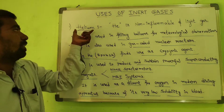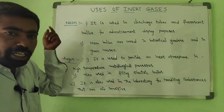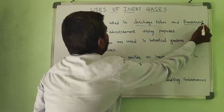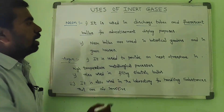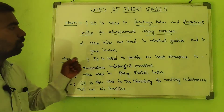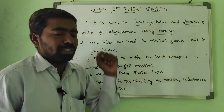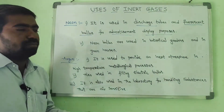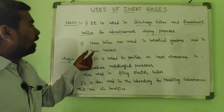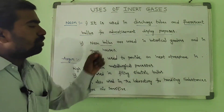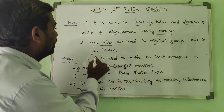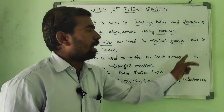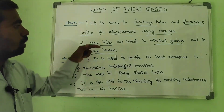The uses of neon: neon is used in discharge tubes and fluorescent bulbs for advertisement display purposes. Neon bulbs are also used in botanical gardens and greenhouses. These are some of the uses of neon.